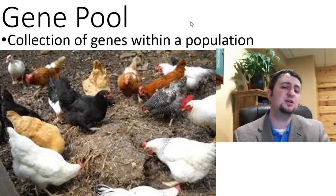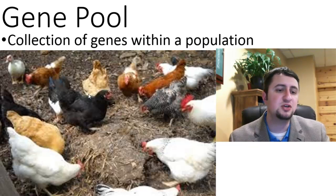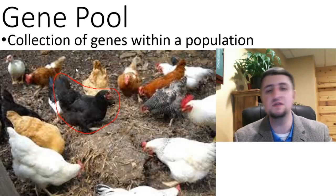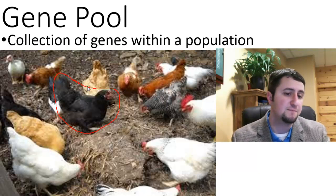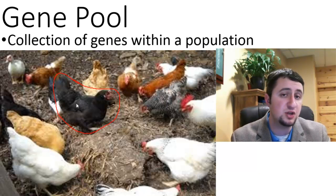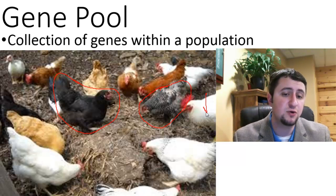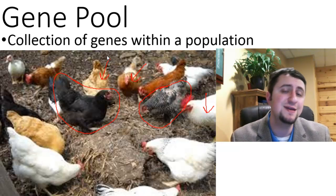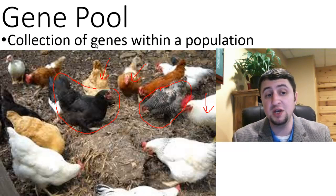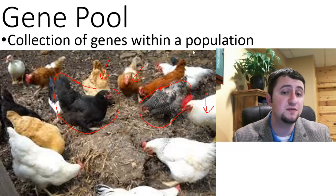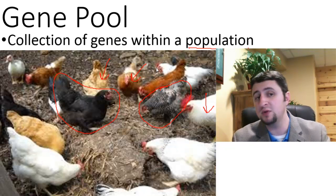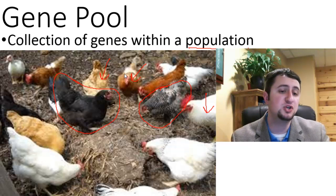So what actually is a population? Let's look over here at these chickens. This black one here has the genes to be a black chicken. Now if we include not only the genes to be black, but also this organism's genes to be black and white, this organism's genes to be white, this one to be brown, this one to be tan — that is what we call a gene pool. A gene pool is the collection of the genes within a population.